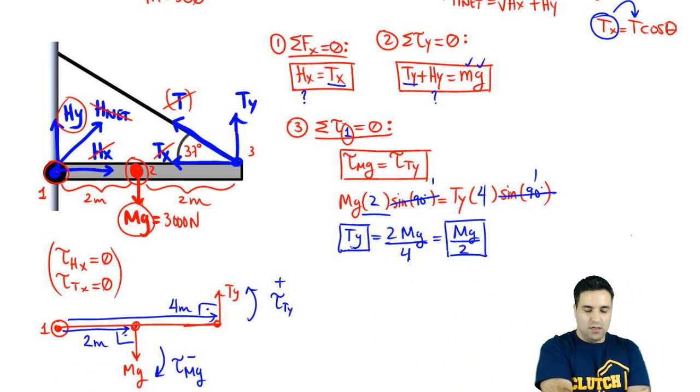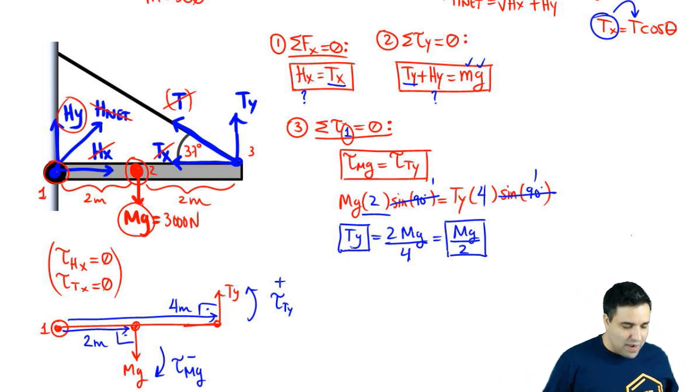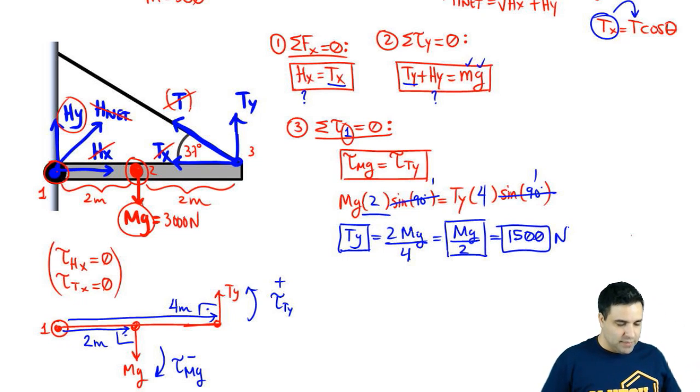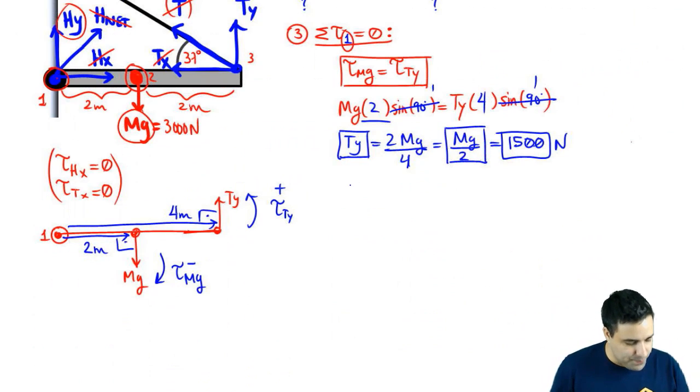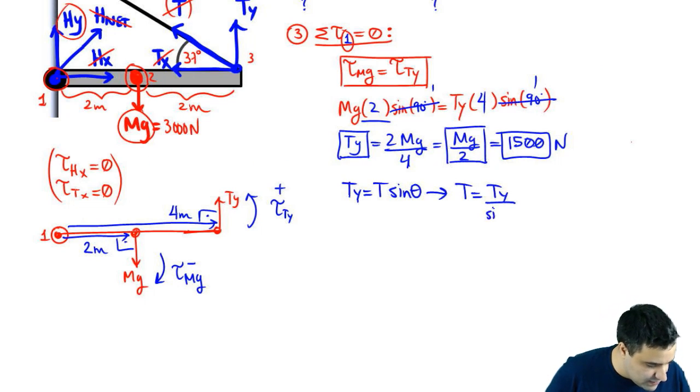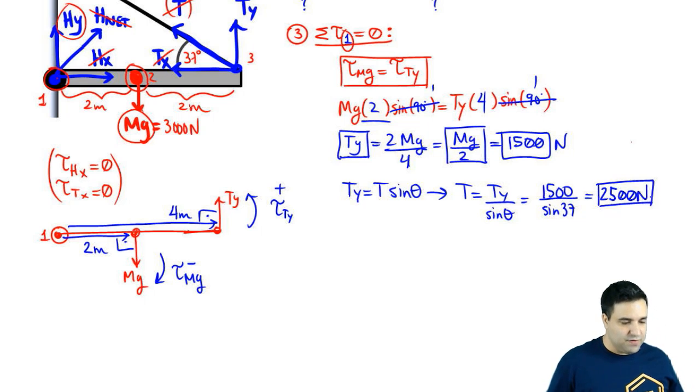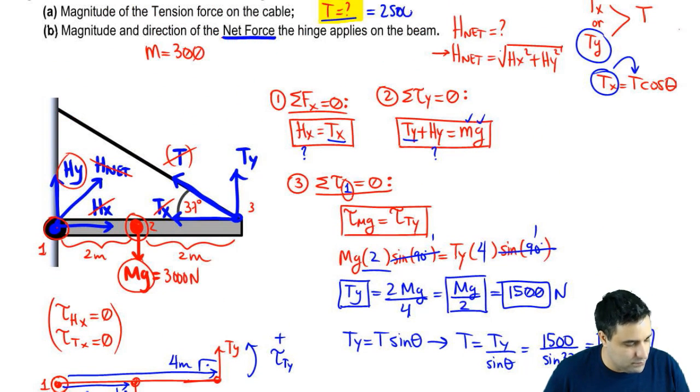So I got Ty. That's good news because, remember, once we know Ty, we'll be able to find T by connecting, by using the equation that connects it to T. Ty is defined as T sine of theta, so T is Ty divided by sine of theta, so it's 1,500 divided by sine of 37. And if you do this, you get a T of 2,500 Newtons. So we got that T is 2,500 Newtons up here.